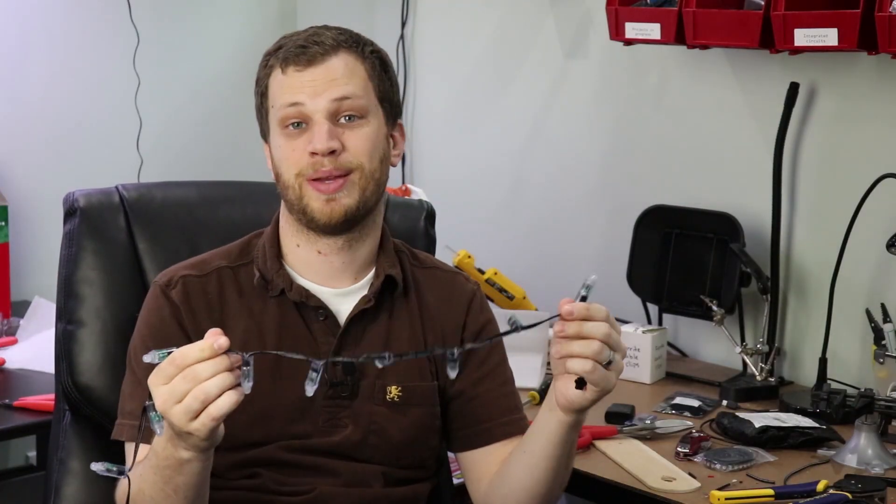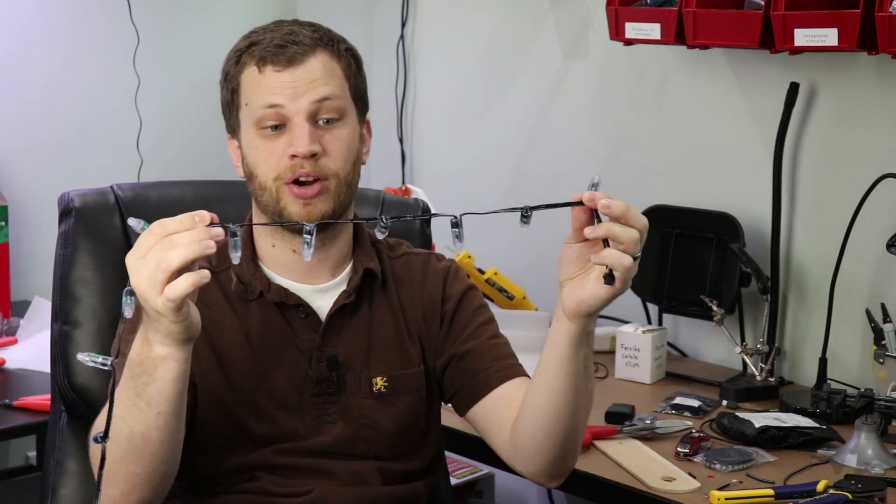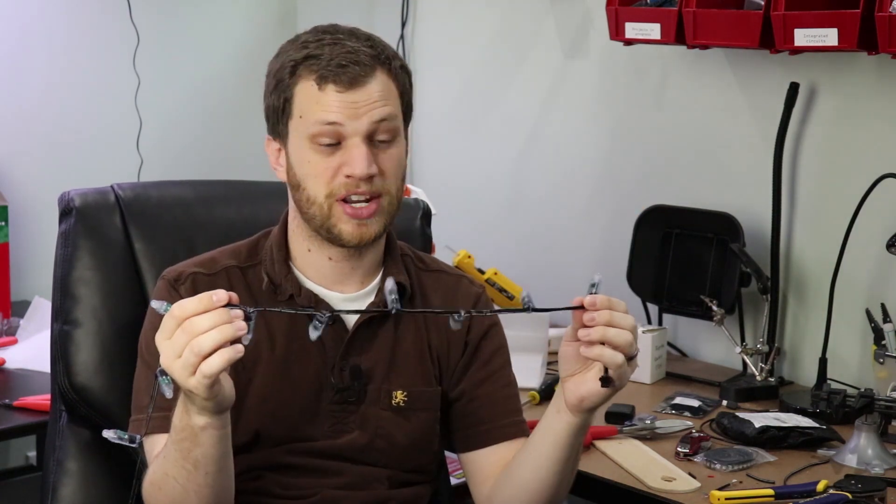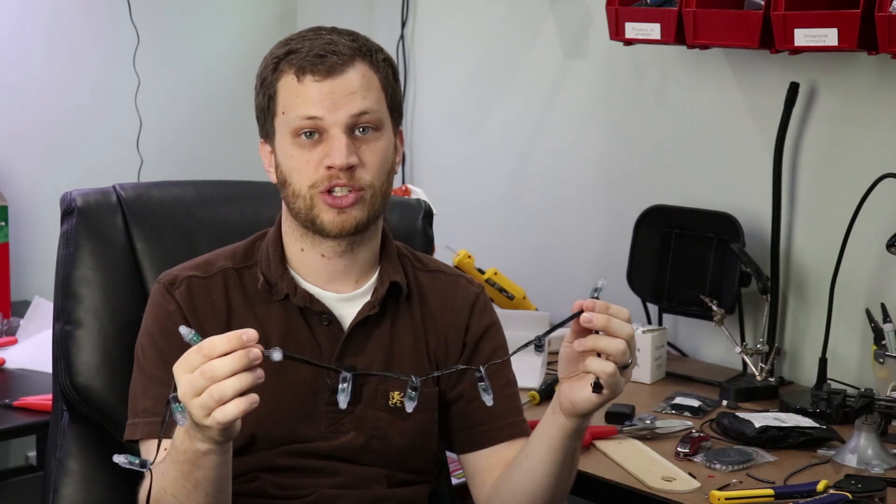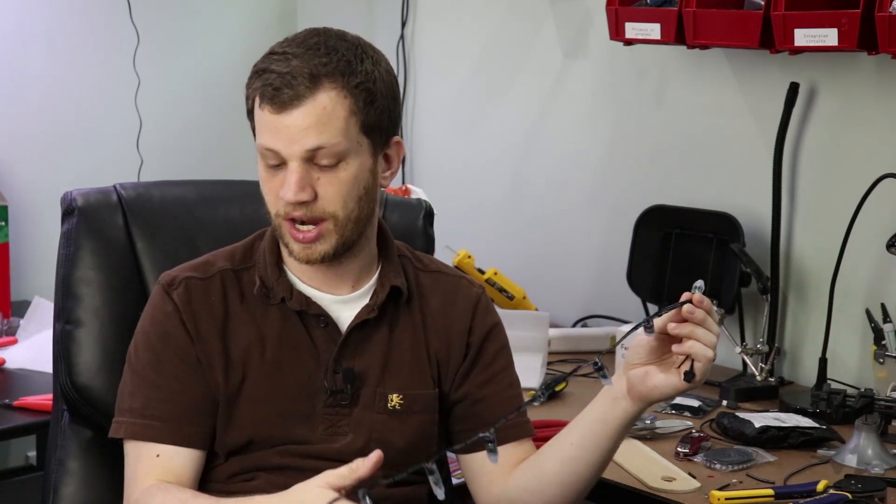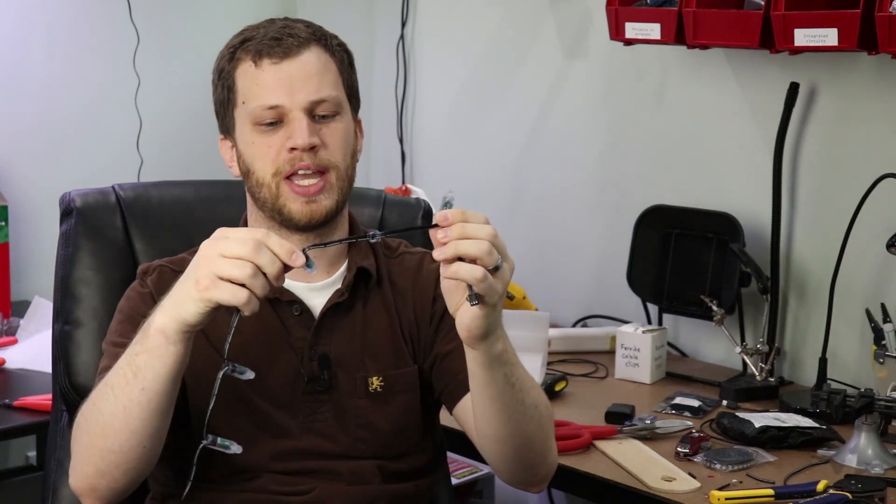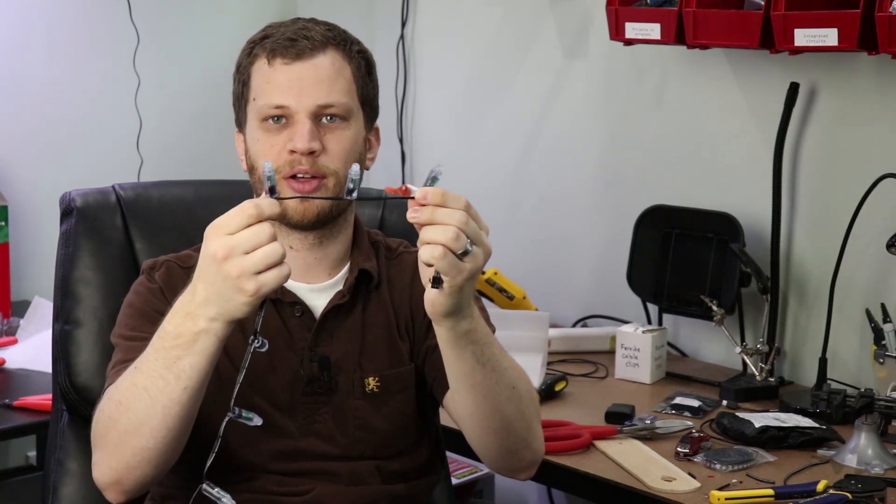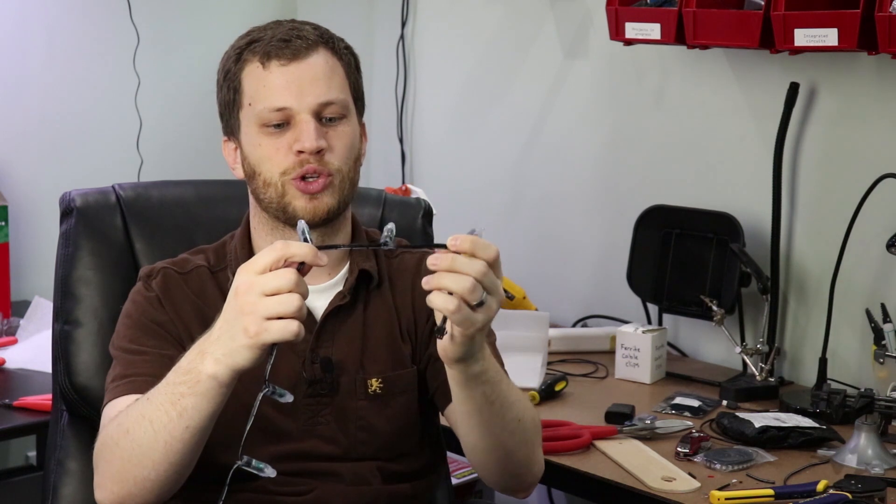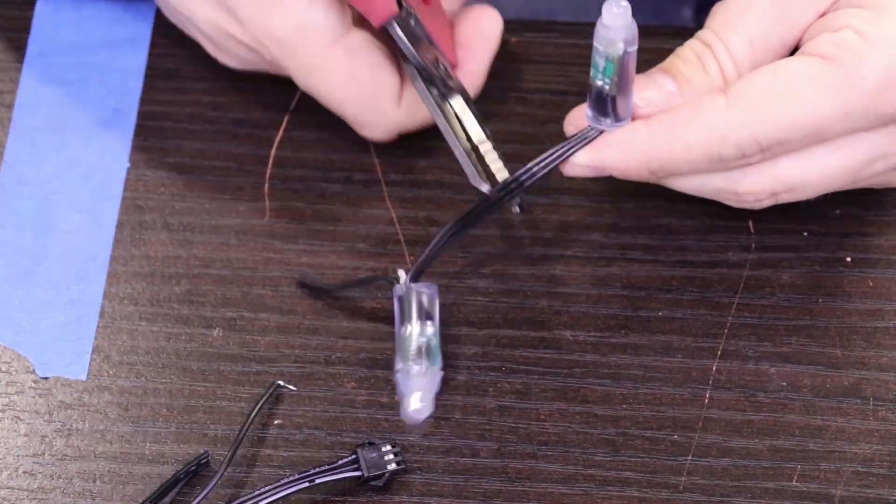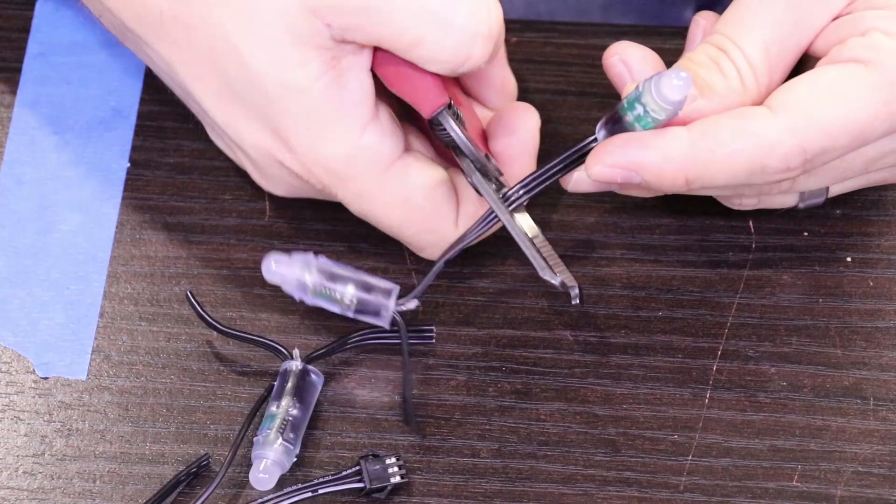I went ahead and just purchased the same exact LED but they're actually already on a string for me. This came in a string of 50 but I'm only going to need 26, so what I'll end up doing is cutting off the last 24. And another problem with these is the cable in between each one only gives me about 3 or 4 inches of space, and so what I'll probably do is chop off the middle of these and add an extension cable in between.